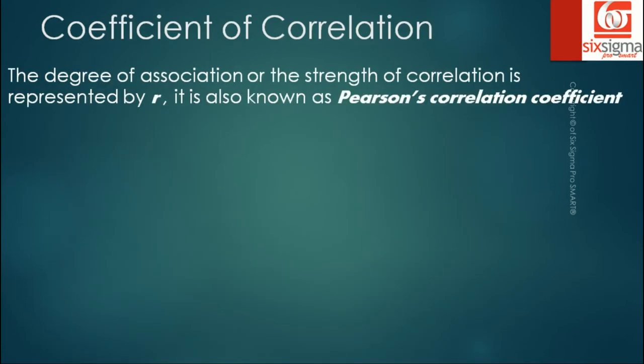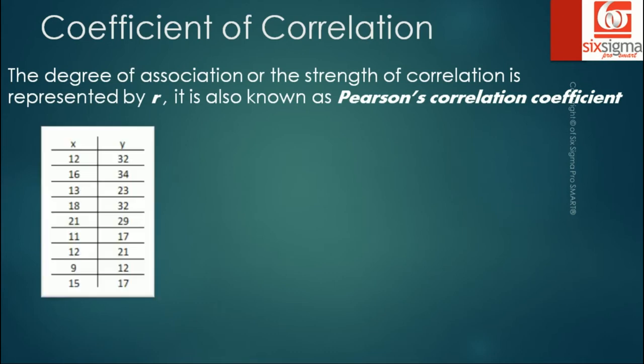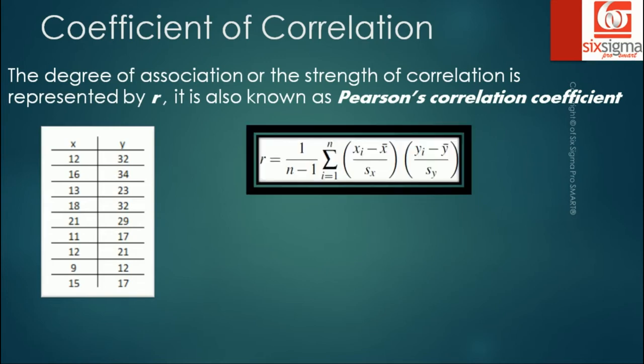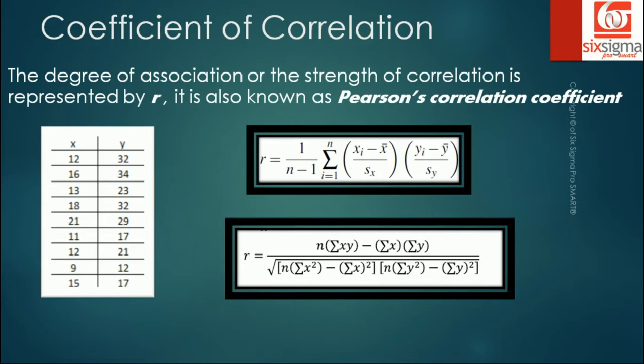The degree of association or the strength of correlation is represented by R and is known as Pearson's correlation coefficient. Let's say we have an ordered pair x and y, where x and y both are continuous. Now you don't need to be scared of these formulas because most of the work that we do is simplified if you're using software like Excel. All you have to do is apply a simple formula: CORREL. You just put array one as x and array two as y, or vice versa. It doesn't matter in Excel because these formulas are symmetric.